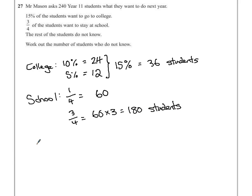The question asked is to work out the number that do not know. So we know that there are 240 in total. If we take away the 180 that want to go to school...